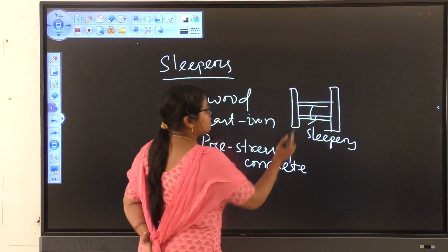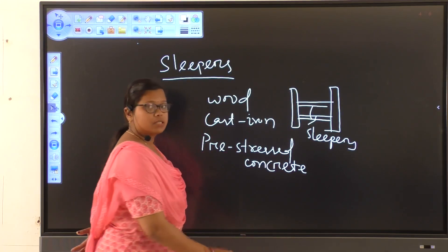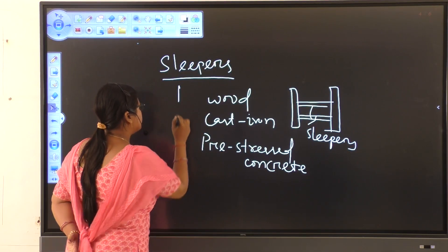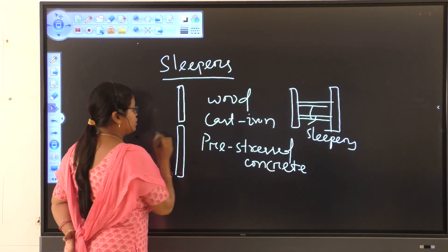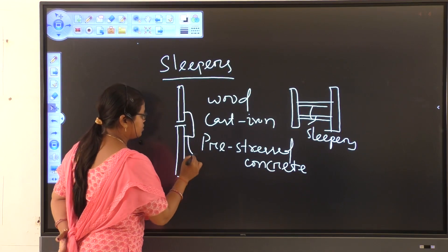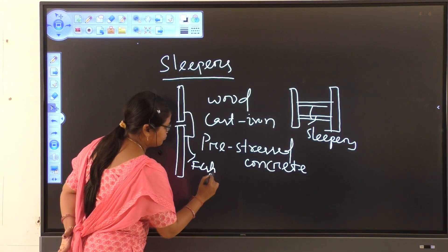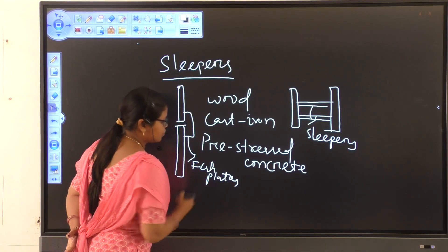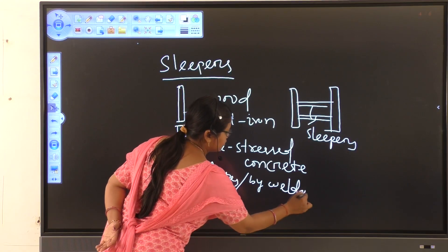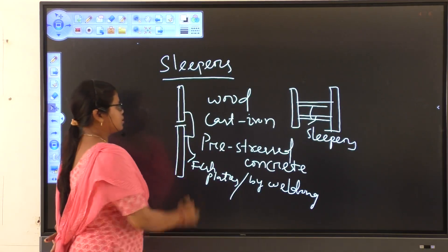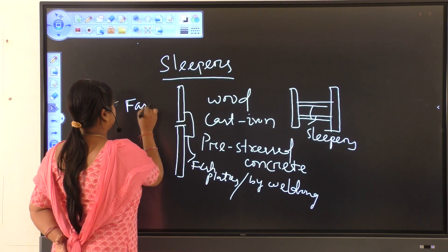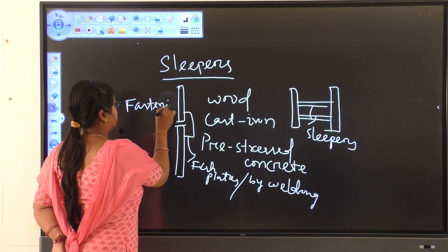Next, sleeper, the two ends of rails, the two ends, like that, it is the one rail and it is another rail. The two ends of rails is connected by either fish plates or by welding. This is known as fastenings.